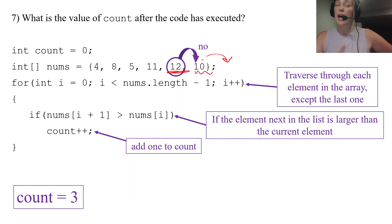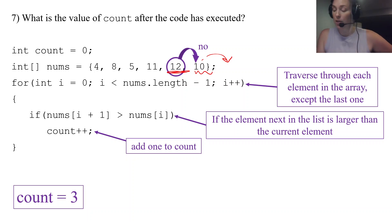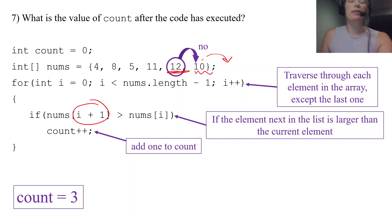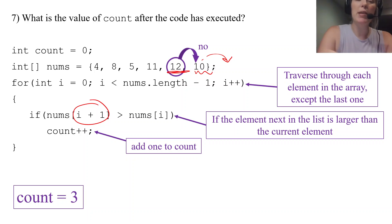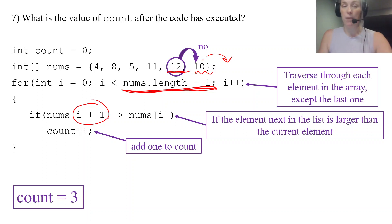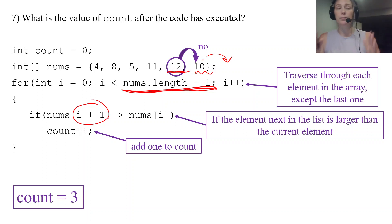Be careful of out-of-bounds exceptions especially when you use i+1 or i-1 inside the loop — you have to adjust your loop header boundaries accordingly to make sure you're staying within the valid range of the array.